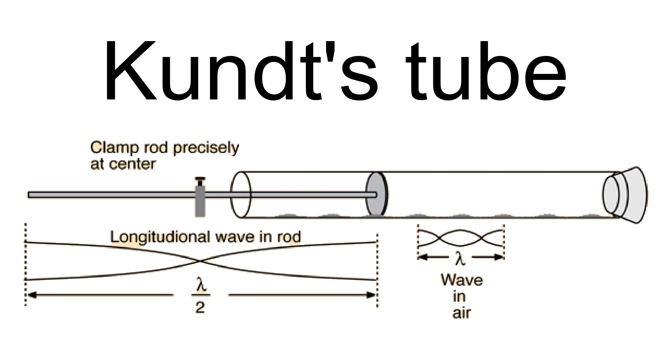Kundt's tube is an experimental acoustical apparatus invented in 1866 by German physicist August Kundt for the measurement of the speed of sound in a gas or a solid rod.